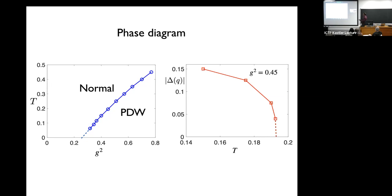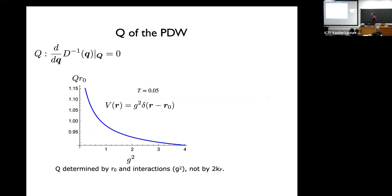We can look at the temperature dependence below the phase transition in the pair density wave regime, solving the non-linear equations with self-consistency including the expectation value at finite q of the boson. There's indication that the transition is continuous — the order parameter develops smoothly. We can also determine the ordering wave vector of the pair density wave by looking at the location in momentum space where the inverse propagator is minimum (zero at the critical point). The ordering wave vector changes with the dimensionless coupling constant g squared; it is not simply 2k_F, but is sensitive to the interactions.